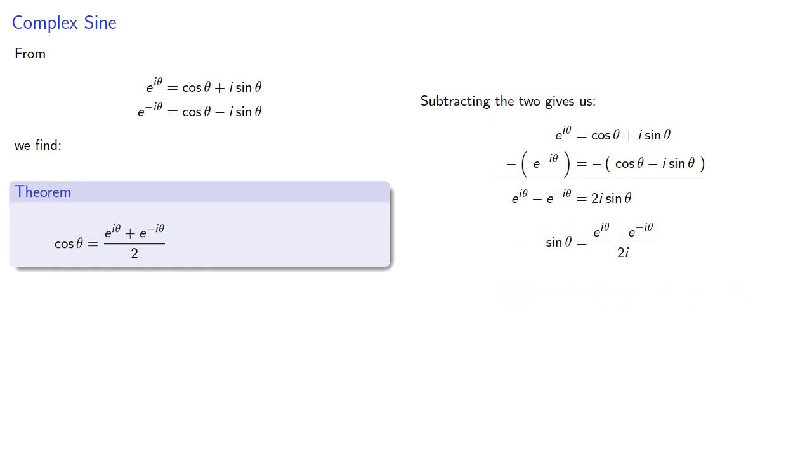We don't really like dividing by an imaginary number, so let's multiply by the not-quite-conjugate. This gives us exponential formulas for sine and cosine.